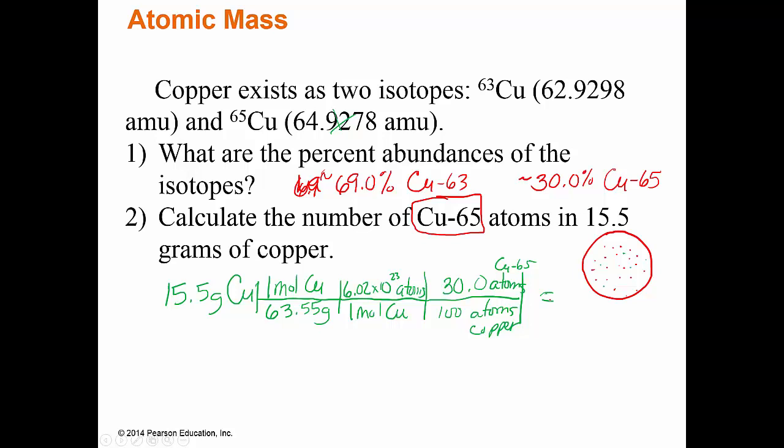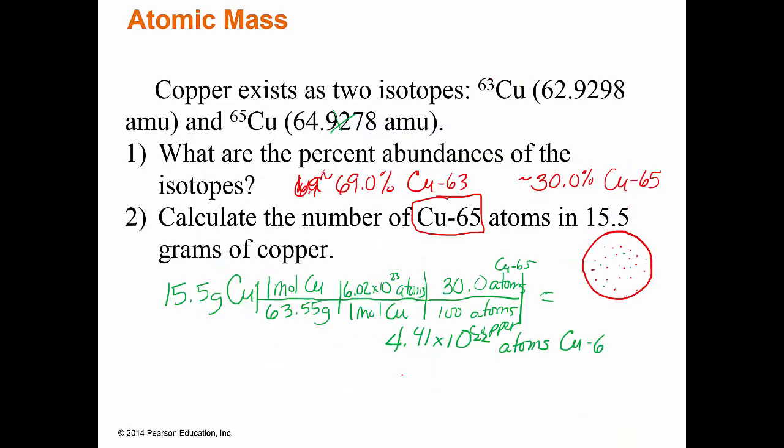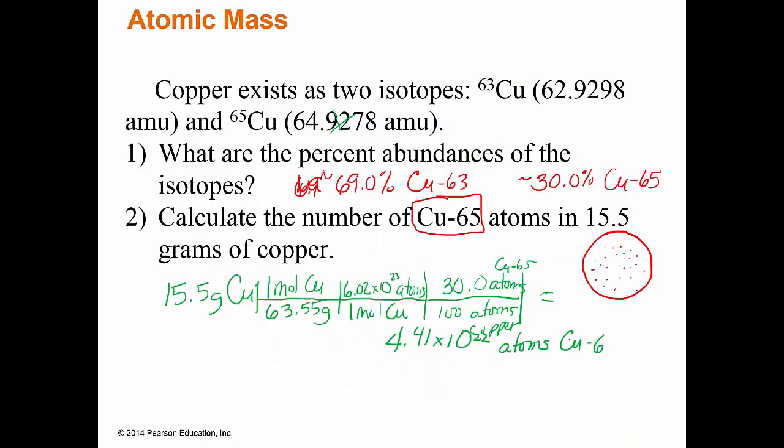Now this problem is not a mental problem. This problem, you pick up the calculator and you crunch the numbers to see what you get. And that's what I'm doing right now. So that's what you're doing right now is crunching those numbers to see how many you get. I got as an answer, 4.41 times 10 to the 22nd. And this, what is this? This is atoms of copper-65. So that's some of the samples that we're going to be doing.